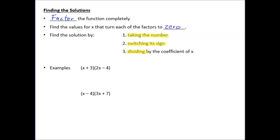Let's look at our example: x plus three times two x minus four. This is the factored form of a trinomial and we need to use those factors to find our solutions. One solution: take the number three, switch the sign from positive to negative, and divide by the coefficient of x. Since x has a coefficient of one, we don't have to divide. So x equals negative three is one of our solutions.